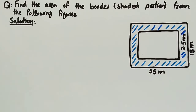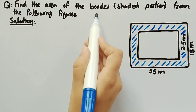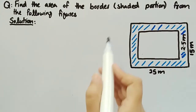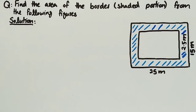In this video we will discuss a question related to area and perimeter. We will find the area of the border or shaded portion of the given figure. Now coming towards its solution, firstly we will write the given data.